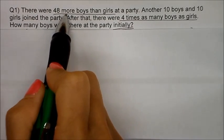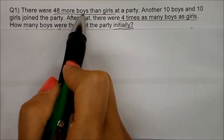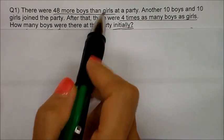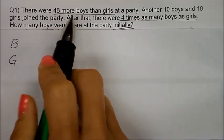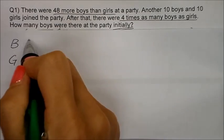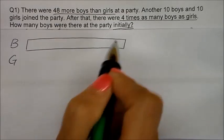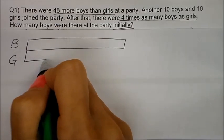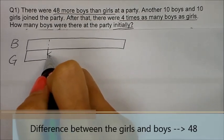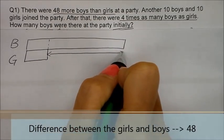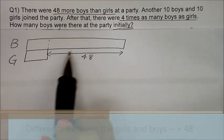There were forty-eight more boys than girls at the party. We are comparing the number of boys to the girls, so we draw a comparison model for boys and girls. There are more boys, so I draw a longer unit for the boys and a shorter unit for the girls. The difference would be forty-eight — forty-eight more boys than girls.